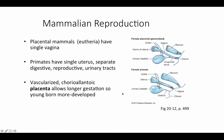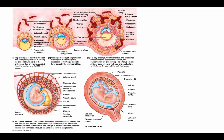In marsupials, we see a version of a placenta called a choriovitelline placenta, made up of the chorion — one of the four extraembryonic fetal membranes — and the yolk sac. But in placental mammals, we call it a chorioallantoic placenta, and it is actually derived from all four of the extraembryonic fetal membranes. This close association between the blood supply of the fetus and the mother allows a longer gestation period, so the young are born much more developed than in marsupials.